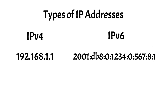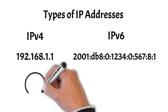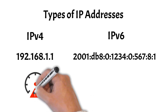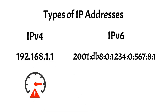You can notice that there is a significant difference between the two. The reason why we have two types of IP addresses is that IPv4 was limited to a relatively small number of possible IP addresses, which wasn't enough to meet our growing needs.